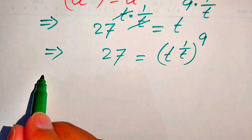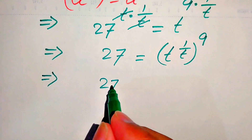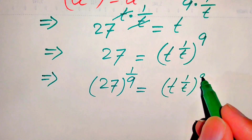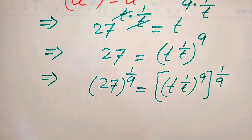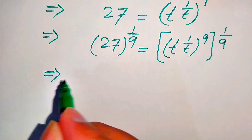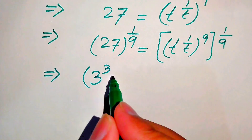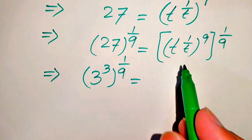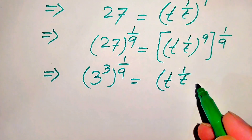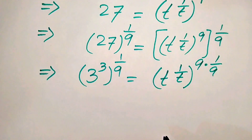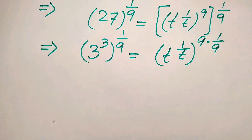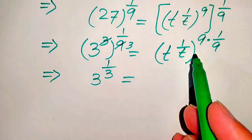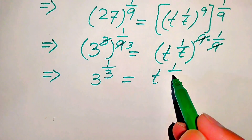In order to move this 9 to the left hand side, we take the 9th root on both sides — in other words, 1 over 9 power on both sides. When we take 1 over 9 power, we write t to the power of 1 over t, to the power of 9, whole power 1 over 9. On the left hand side, we write 27 as 3 cubed, whole power 1 over 9. On the right hand side, we multiply the two exponents: t to the power of 1 over t, whole power 9 multiplied by 1 over 9. Simplifying, 3 times 3 becomes 9, giving 3 to the power of 1 over 3 on the left. On the right, the 9 is cancelled by the 9, giving t to the power of 1 over t.